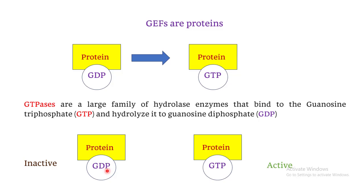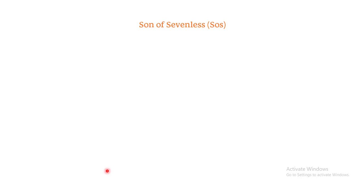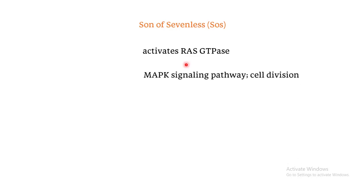One important example from the GEF family is Son of Sevenless, or SOS. This GEF activates the RAS GTPase by removing the GDP from the RAS protein and attaching a GTP to it, thereby activating it. When RAS is activated, it is responsible for activating the MAP signaling pathway, a very important pathway for cell division.